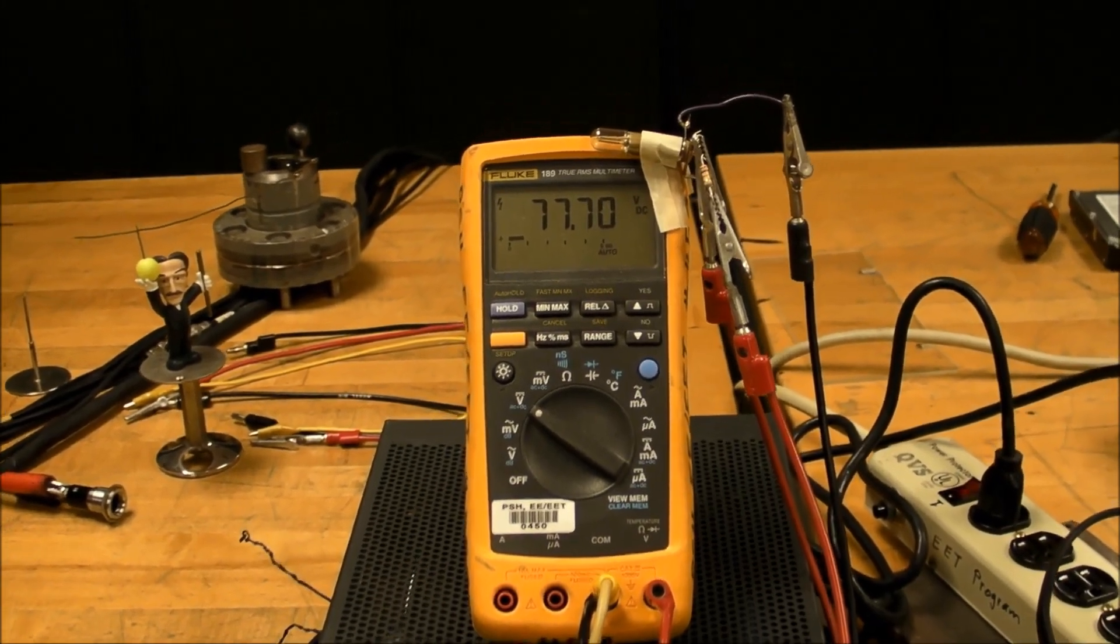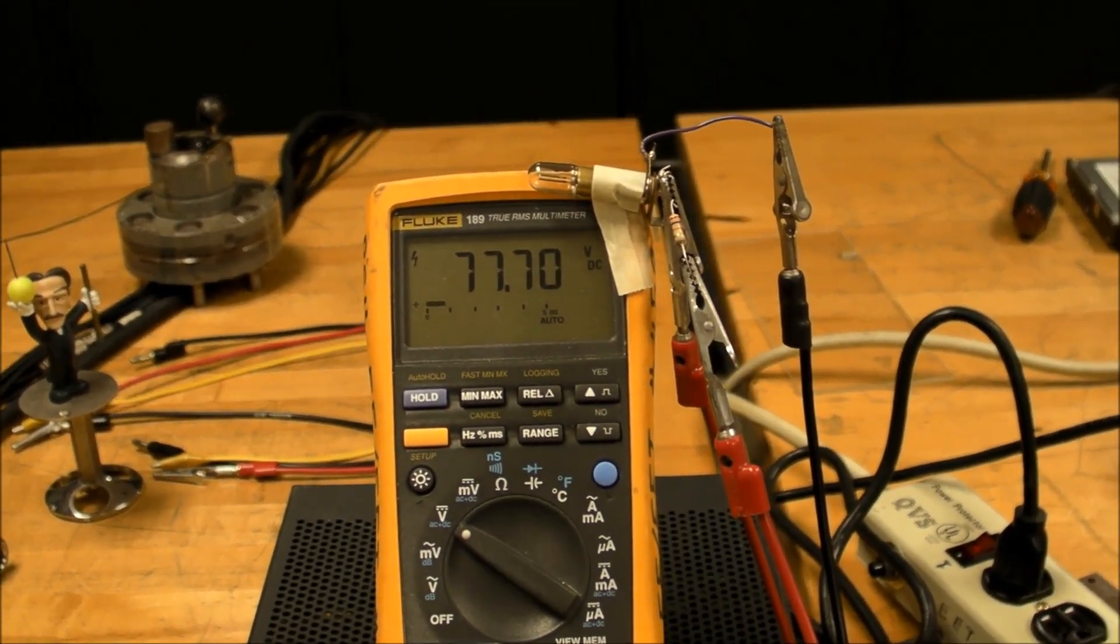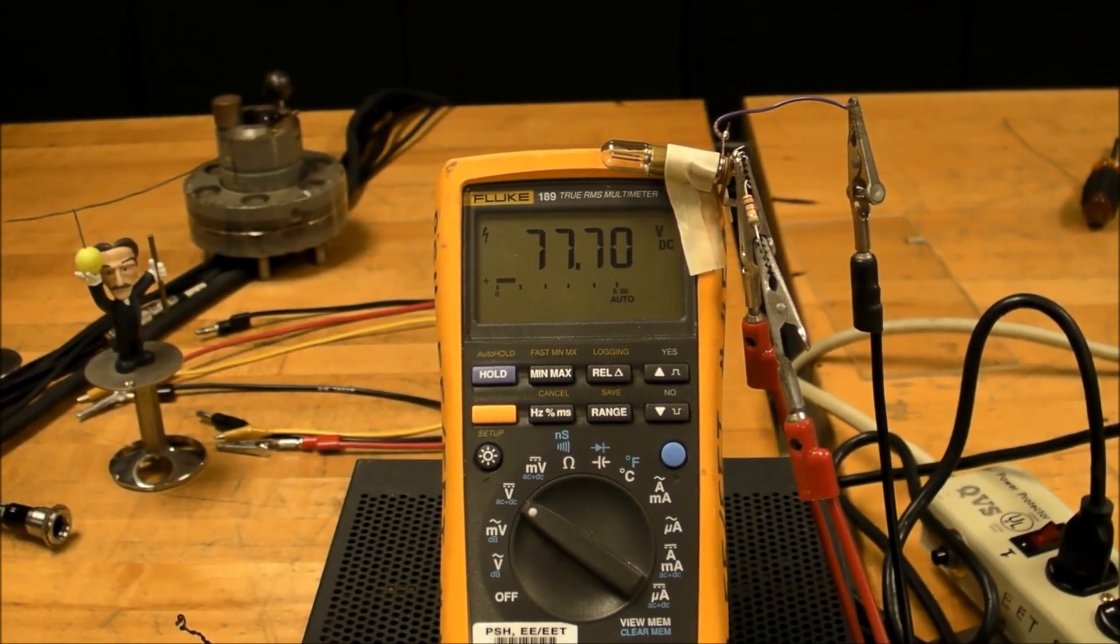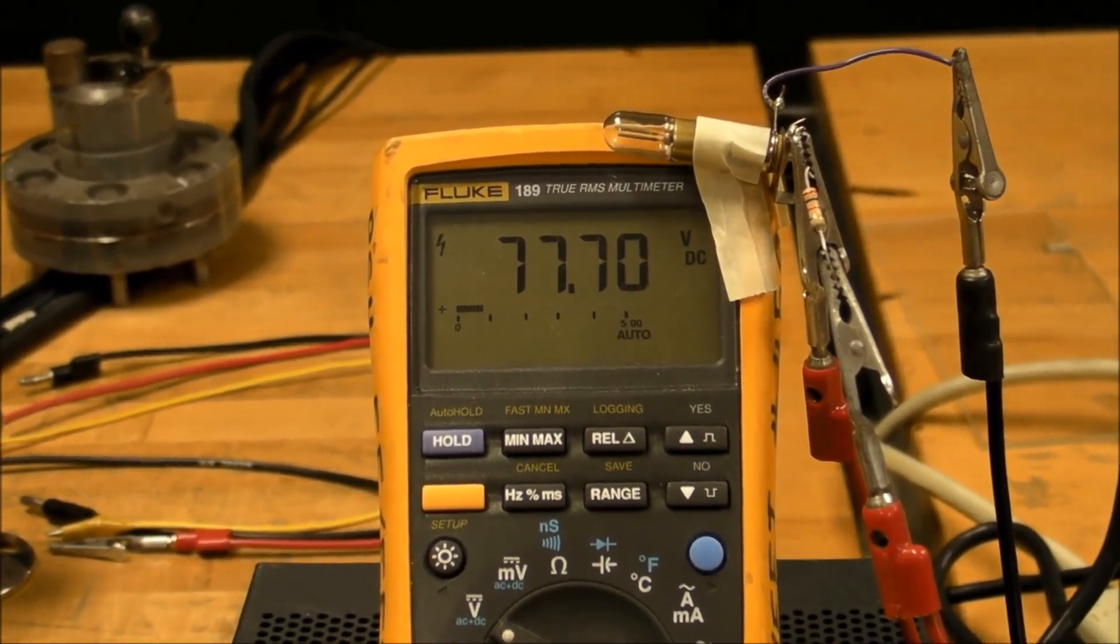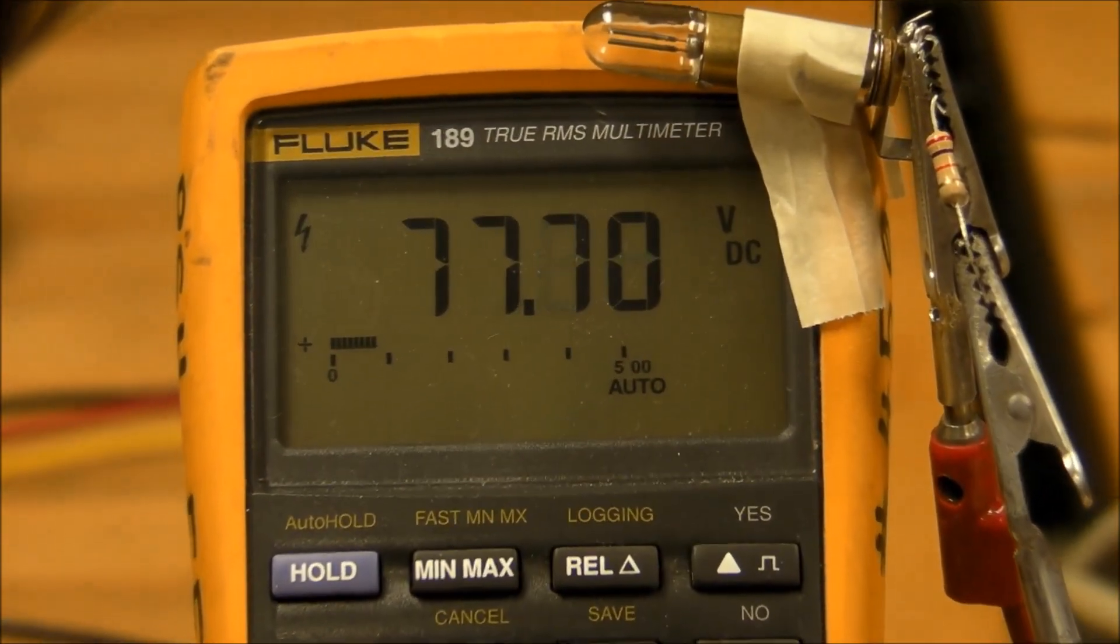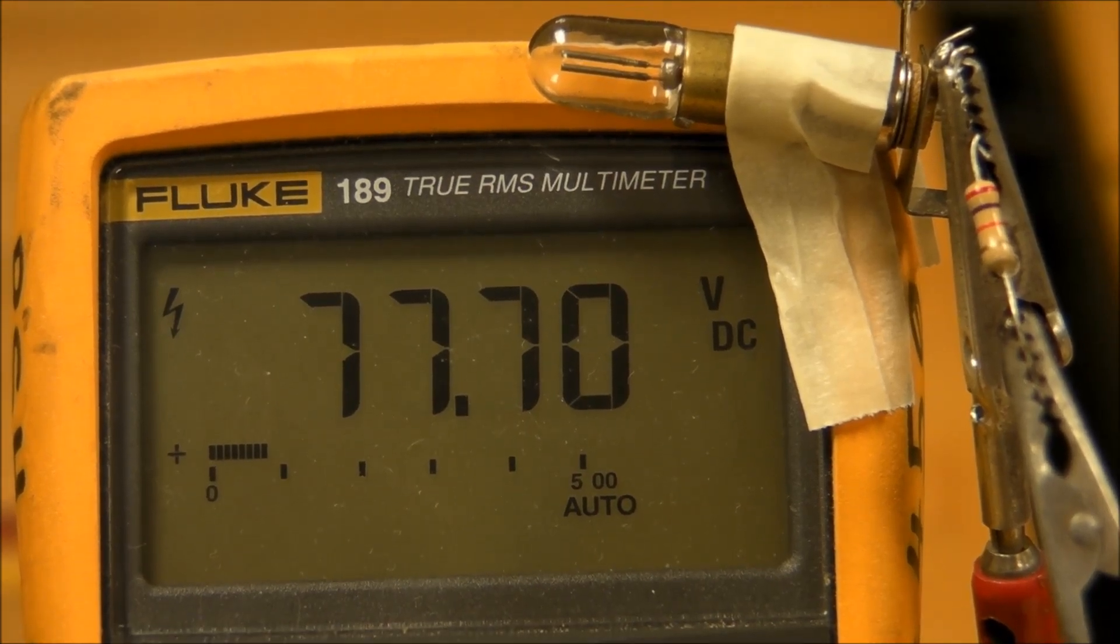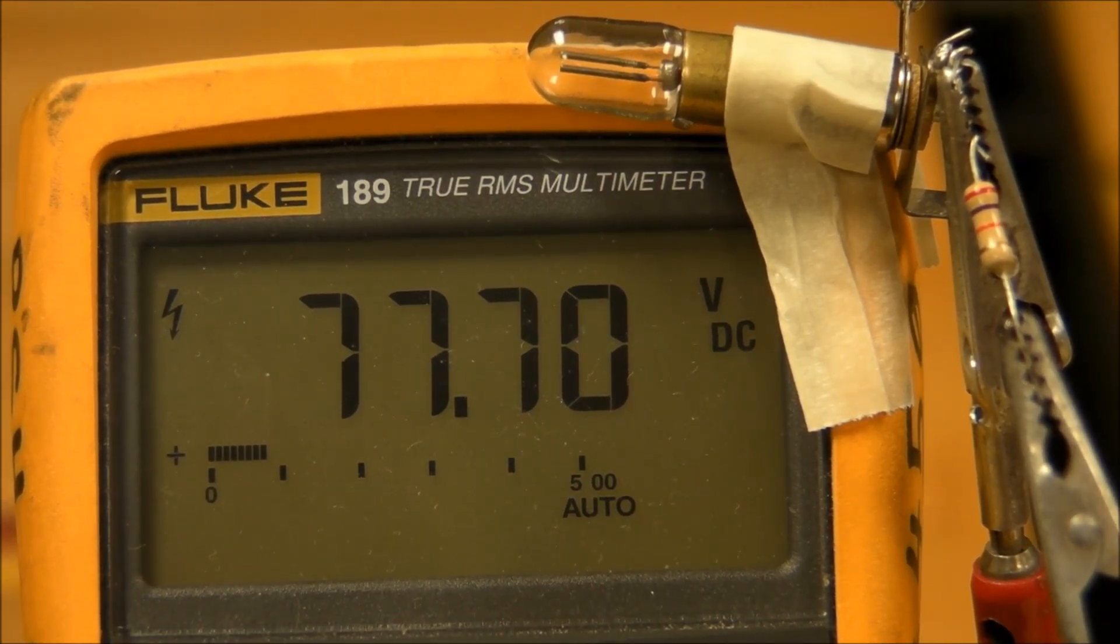On top of that I've got a Fluke 189 with the neon lamp and a series resistor mounted right up there, so we can look at the voltage and see when the lamp turns on in the same camera shot.